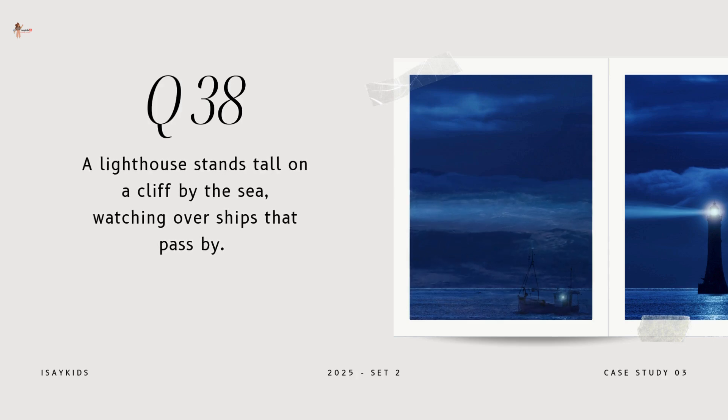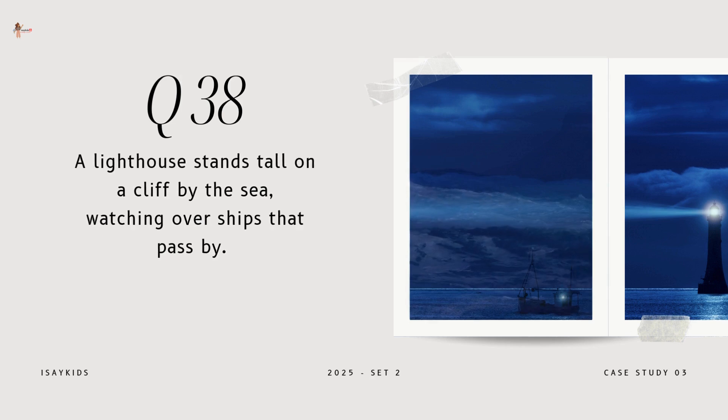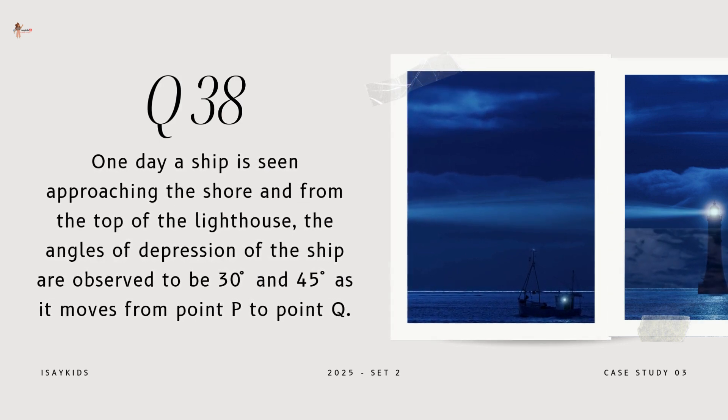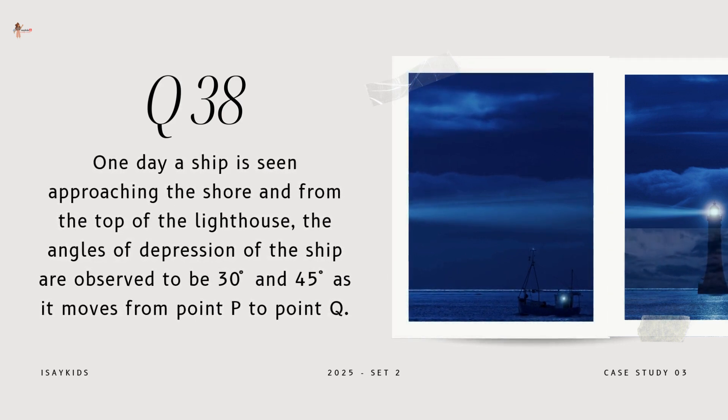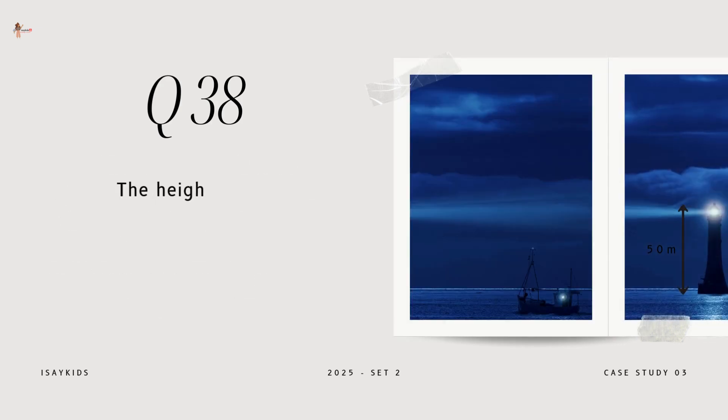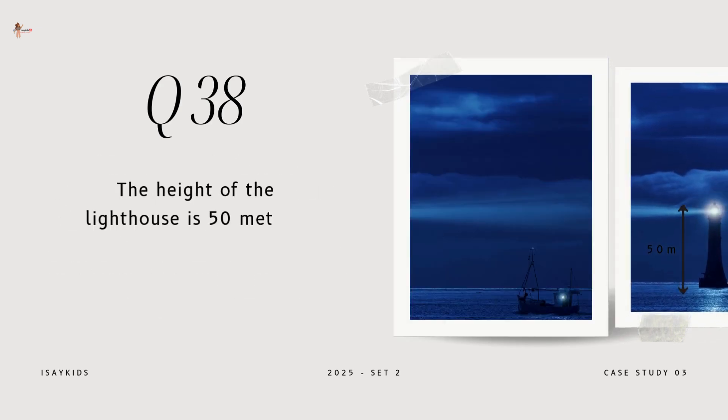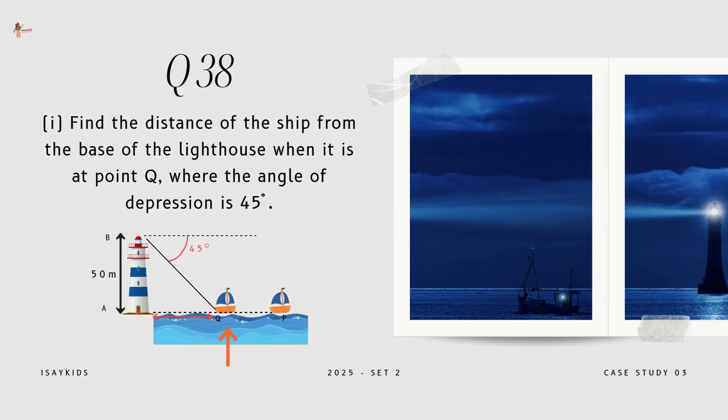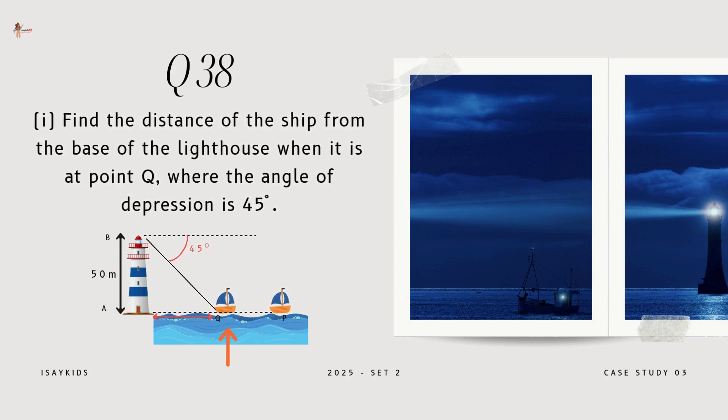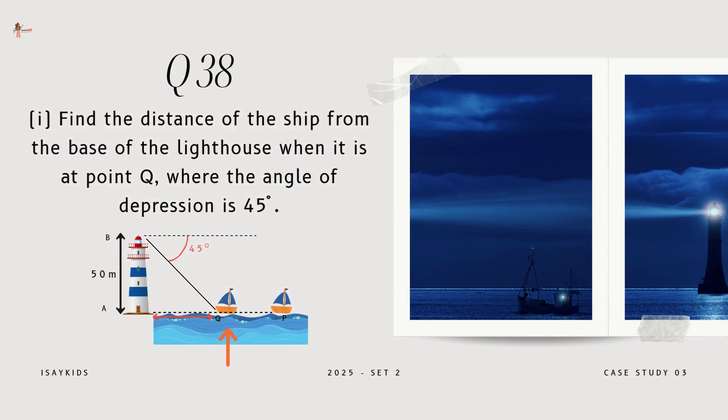A lighthouse stands tall on a cliff by the sea, watching over ships that pass by. One day, a ship is seen approaching the shore. And from the top of the lighthouse, the angles of depression of the ship are observed to be 30 degrees and 45 degrees as it moves from point P to point Q. The height of the lighthouse is 50 meters. Find the distance of the ship from the base of the lighthouse when it is at point Q, where the angle of depression is 45 degrees.